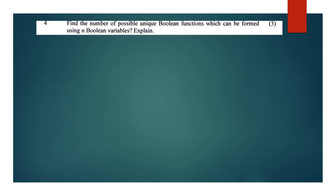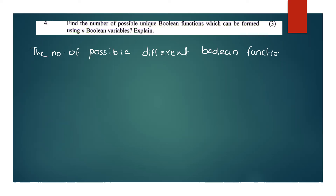Find the number of possible unique boolean functions which can be formed using n boolean variables. If we have n variables, we will show how many boolean functions are constructed. The answer is 2 raised to 2 raised to n. The number of possible different boolean functions of n independent variables is 2 raised to 2 raised to n.